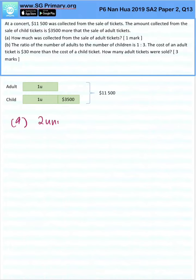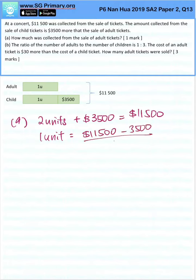So it's 2 units plus $3,500 equals $11,500. 1 unit is $11,500 minus $3,500 divided by 2, which will give us $4,000. This is our answer for A.